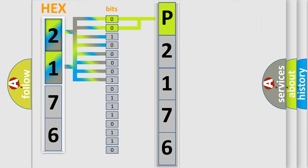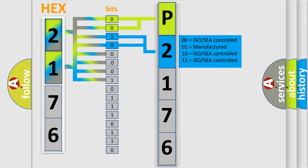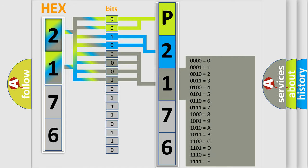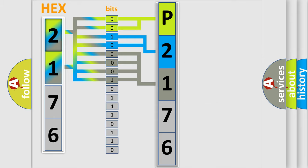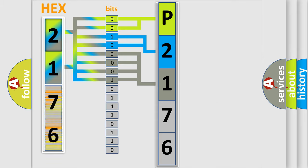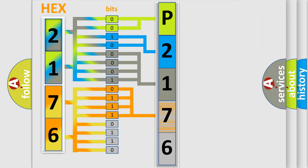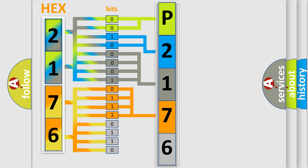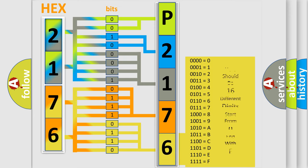The next two bits determine the second character. The last bits of the first byte define the third character of the code. The second byte is composed of a combination of eight bits. The first four bits determine the fourth character of the code, and the combination of the last four bits defines the fifth character. A single byte conceals 256 possible combinations.